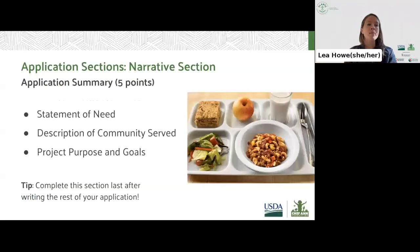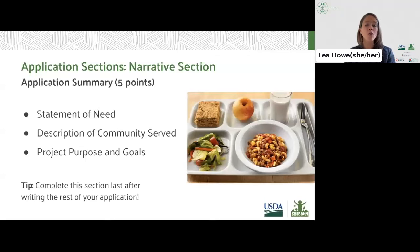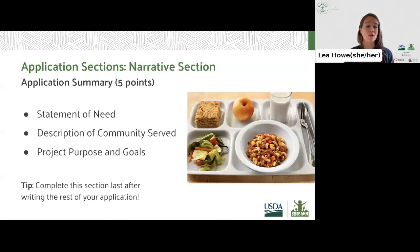The first narrative section is your application summary. You want to aim to make this section concise while capturing the viewer's attention. This section should include your project title, a description of why your project is needed, the community you'll be serving, and the purpose and goals of your project. The character maximum for this section is 1,500 characters, and the total point value is five points. A reviewer should be able to quickly glean what your project is about after reading this section. Even though it's the first narrative section, we actually recommend that you do this last before turning in your application, as it is really a high-level summary of the other parts.